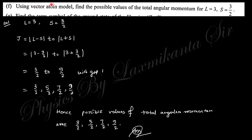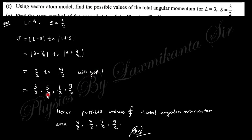Next question: using the vector atom model, find the possible values of total angular momentum J when L=3 and S=3/2. J ranges from |L−S| to L+S, that is from 3−3/2=3/2 to 3+3/2=9/2, in steps of 1. Hence the possible values are J = 3/2, 5/2, 7/2, 9/2.